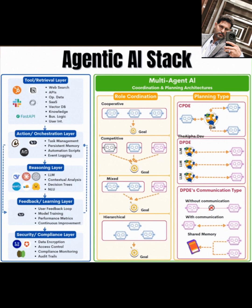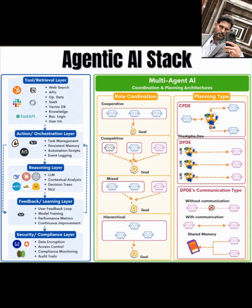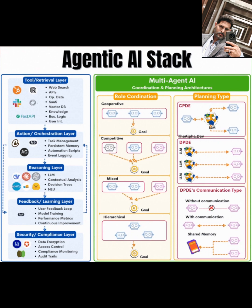Next, we move to the action/orchestration layer. This is where the magic of task management happens. Your agents need persistent memory to maintain context across interactions — think of it as a stateful memory buffer. Automation scripts are critical here for orchestrating workflows, while event logging ensures you can track and debug agent activities. This layer is all about enabling your agents to execute tasks seamlessly, whether they're fetching data or performing complex operations.